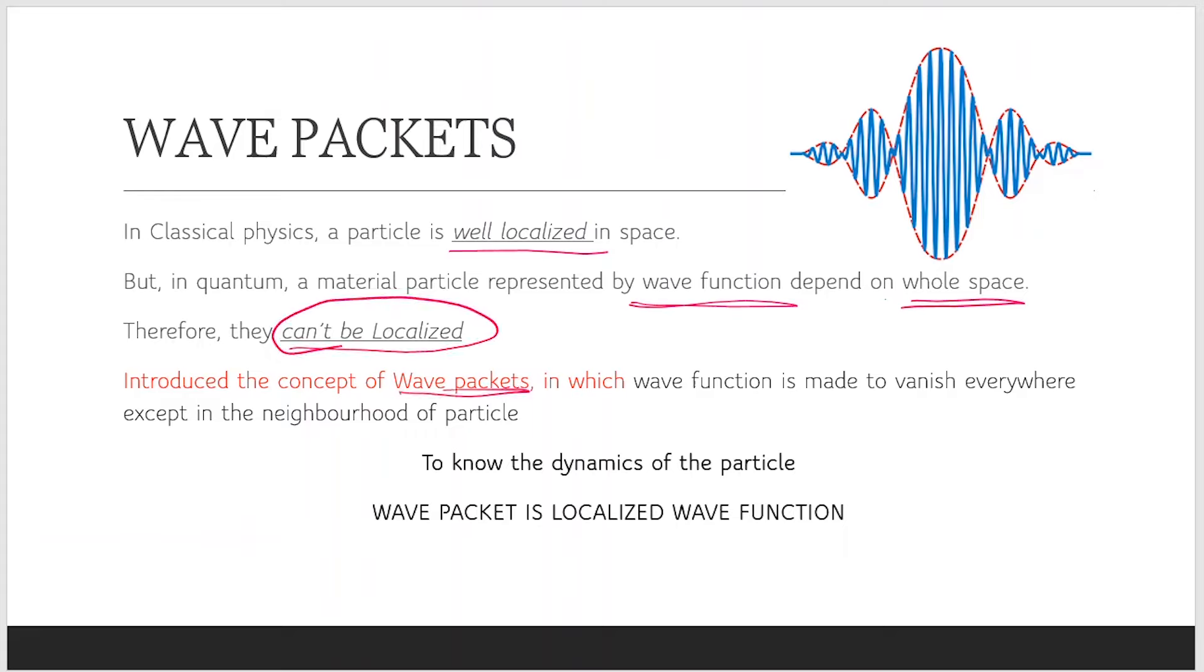So we introduce the concept of wave packets in which wave function is made to vanish everywhere except in the neighborhood. If this is the wave packet, then at x equal to zero, about x equal to zero, if here is a particle, then in the neighborhood we have the wave function and elsewhere we have to vanish away all the wave function except in the neighborhood of the particle. So it helps us to know the dynamics of the particle.